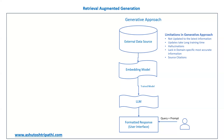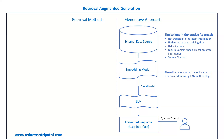Now let's discuss why we are here — RAG. How are these limitations reduced using RAG methodology? I'm not saying RAG eliminates them completely, but it reduces them to a very large extent. RAG combines two approaches: retrieval-based and generative. For domain-specific accurate information, instead of retraining the LLM — which takes too much time and resources — the alternative is retrieval methods using private or custom datasets.